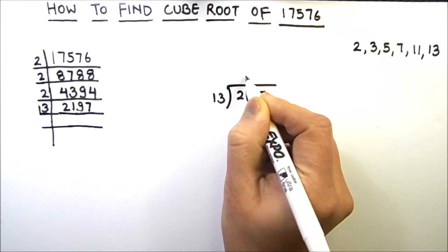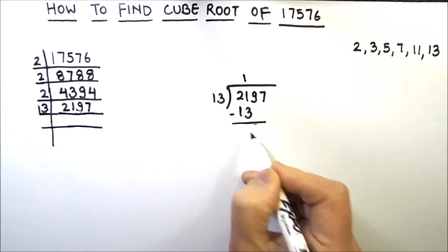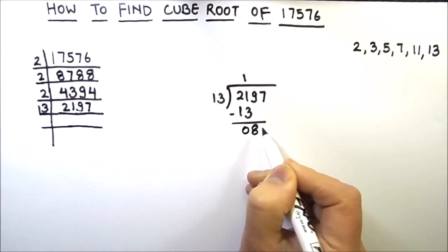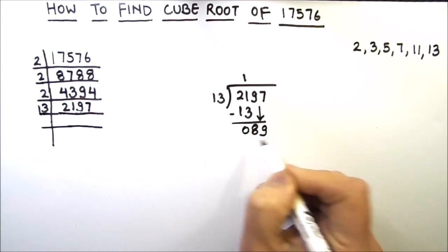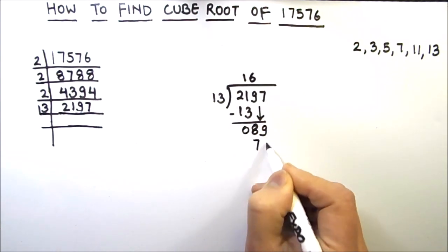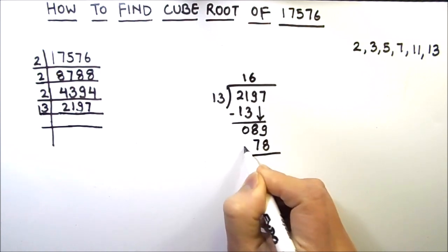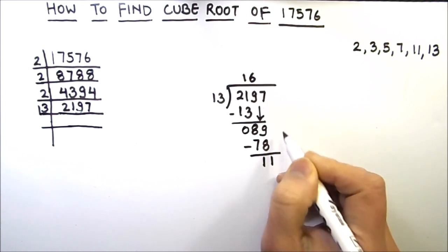So 13 times 1 is 13. We got 8 as remainder. Then we will drop down 9, 89. So 13 times 6 is 78. So this is 1 and this is 1. So 11 is the remainder.